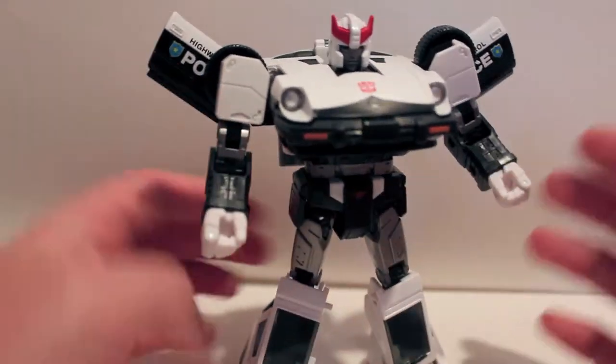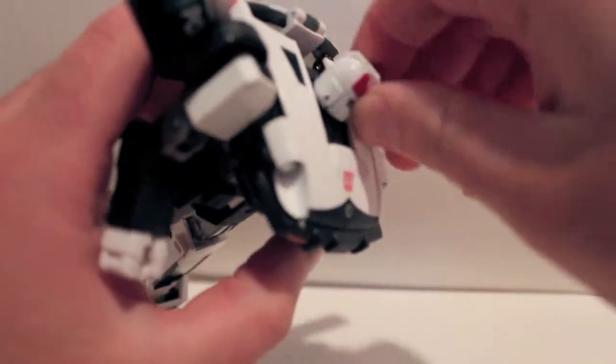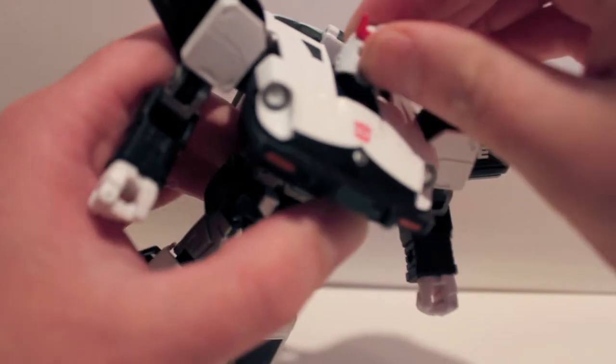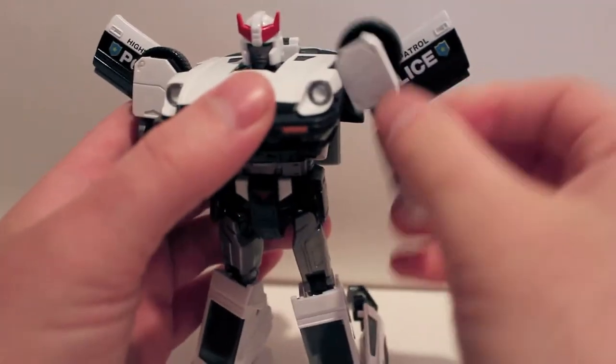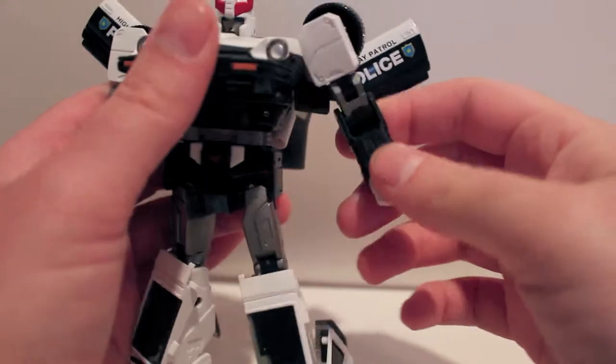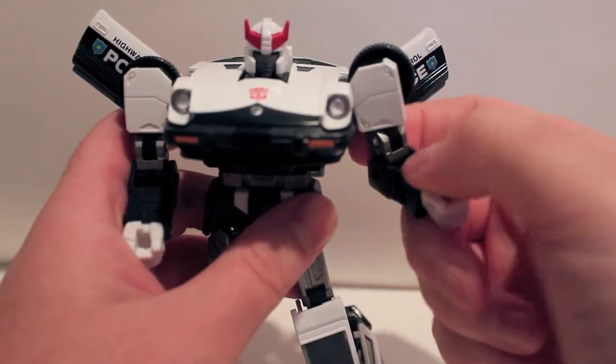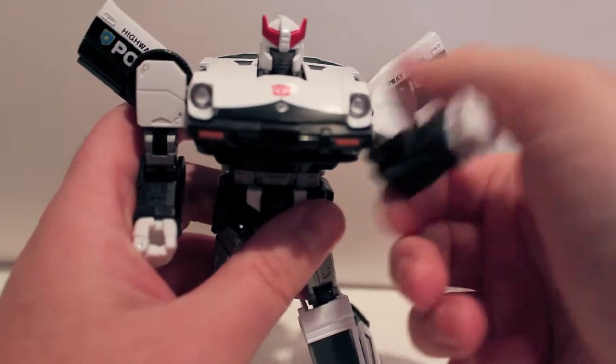So as far as articulation, head is on a swivel and a hinge up and down. Shoulders are on a hinge and a ball joint. Double elbows, mostly for transformation. When you bend the elbow you kind of want to bend it down here because otherwise it looks funny.